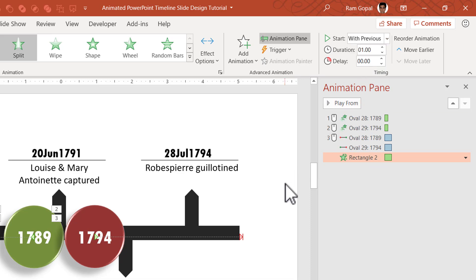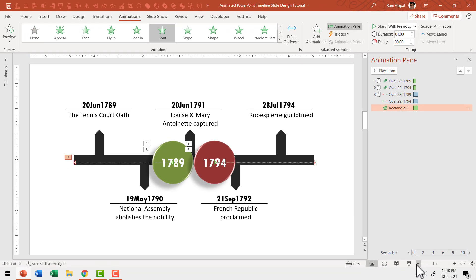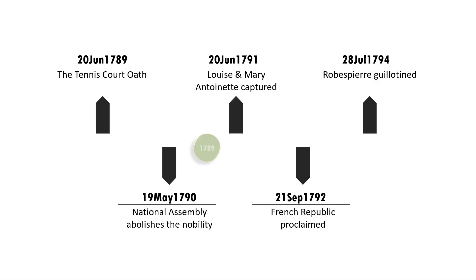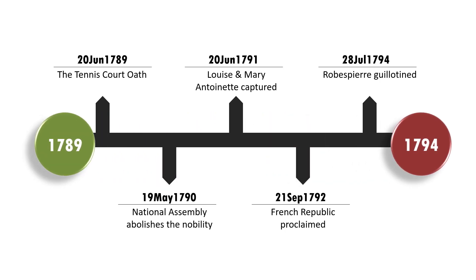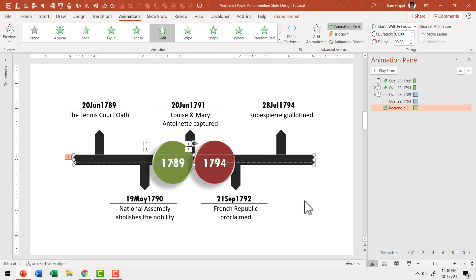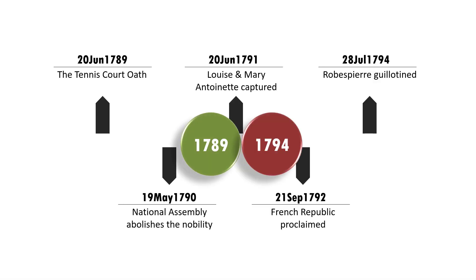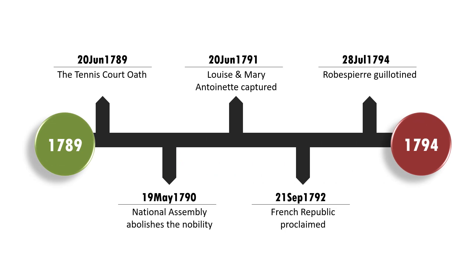Let us go to slide show and see if we need to make some adjustments. On a click, I introduce the starting point, then the end point, and then the animation happens. You can see there is a bit of a lag between the time it takes for the two buttons to move to the edges and for this bar to reveal itself. So I need to ensure that the bar splits out a little bit quicker — I'm going to select it and set it to 0.75 seconds. Now when I go to slide show, you will see that the events happen very nicely like this. Beautiful.